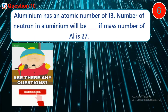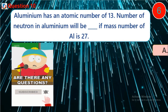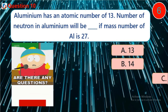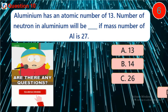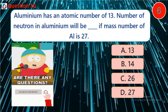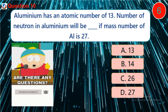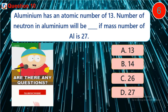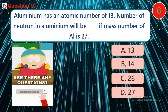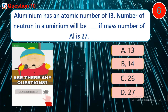Question ten: aluminium has an atomic number of 13. The number of neutrons in aluminium will be dash, if the mass number of aluminium is 27. A. 13, B. 14, C. 26, D. 27.